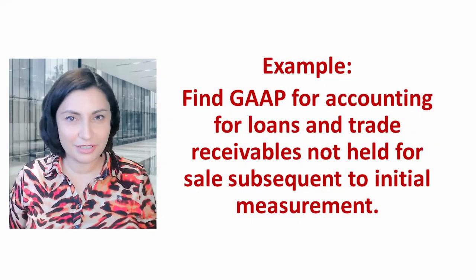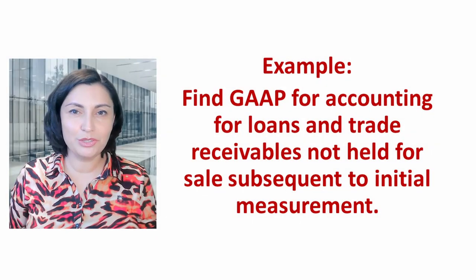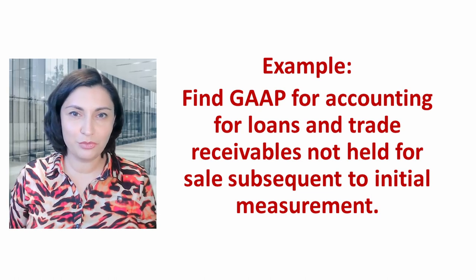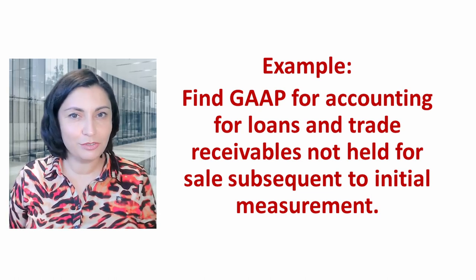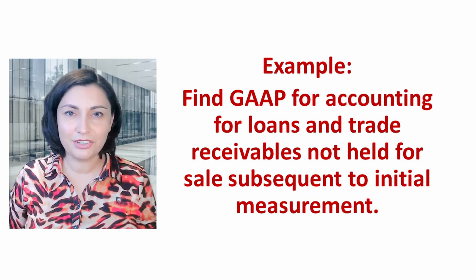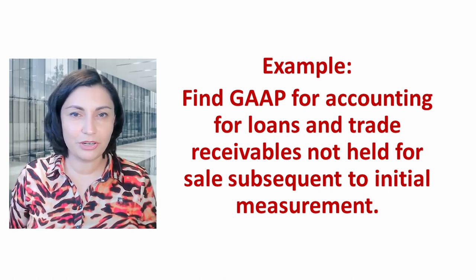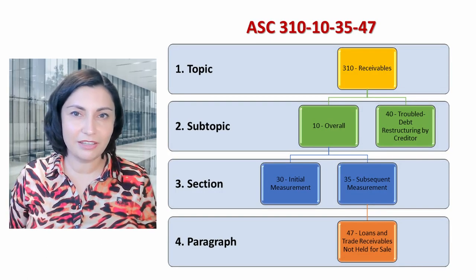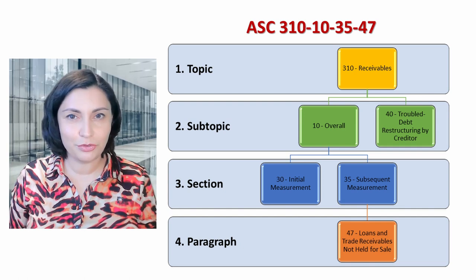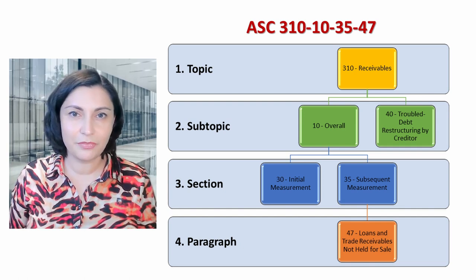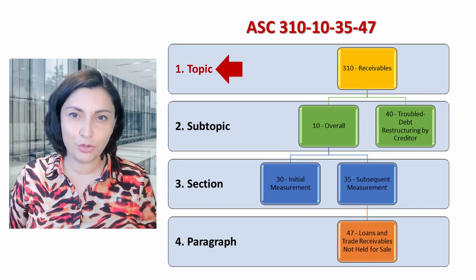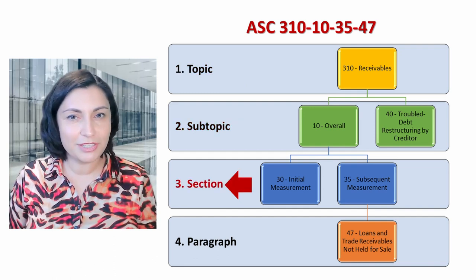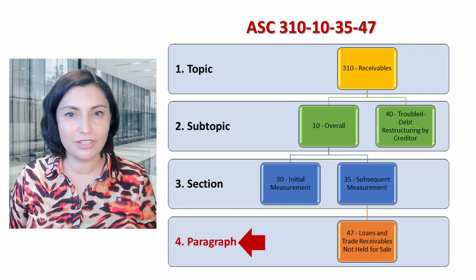Let's look at an example. Let's say we need to find GAAP for accounting for loans and trade receivables not held for sale subsequent to initial measurement. Here is how the codification framework is cited: ASC 310-10-35-47, where 310 is a topic, 10 is a subtopic, 35 is a section, and 47 is a paragraph.